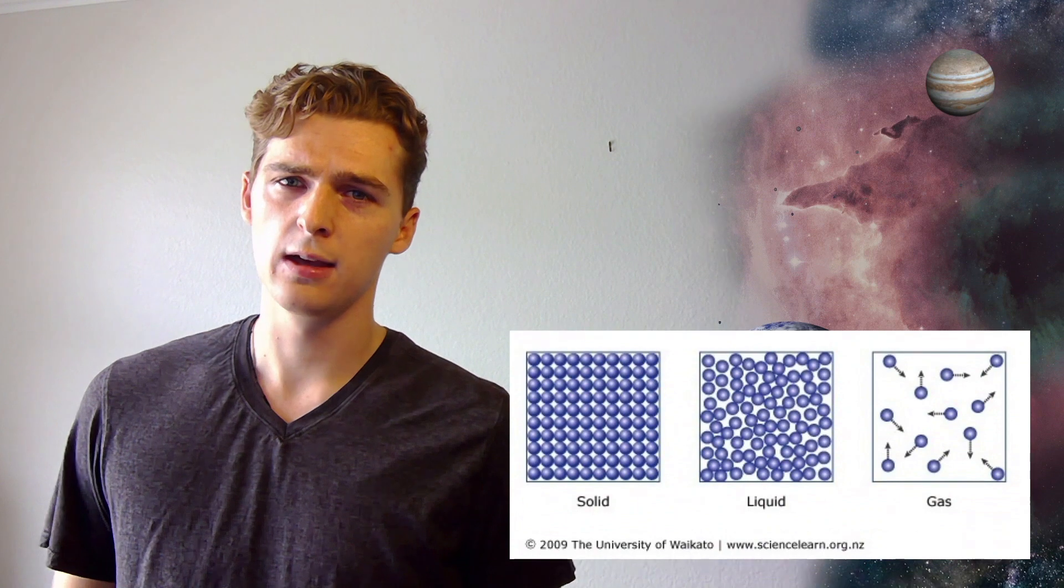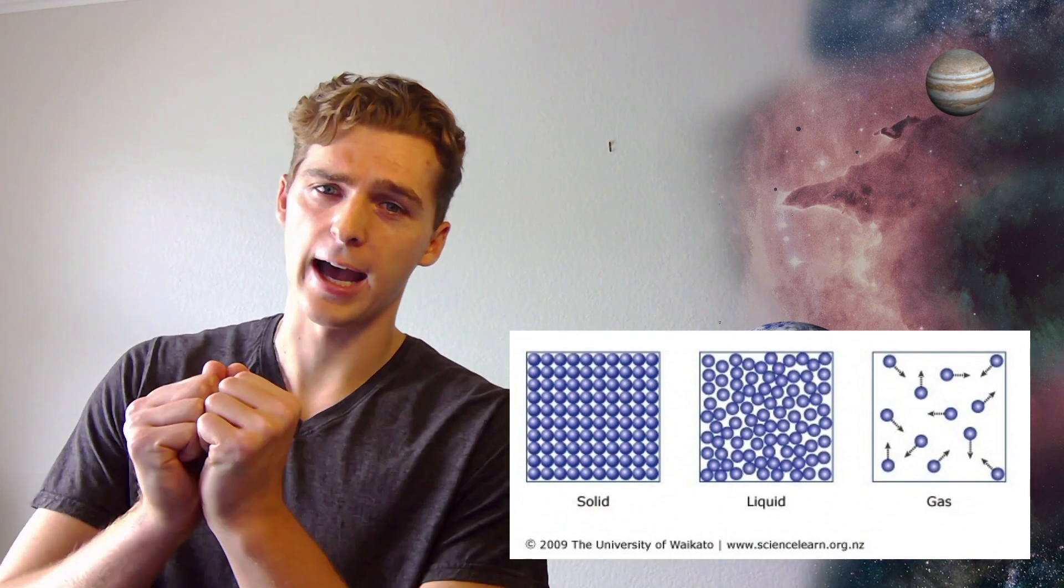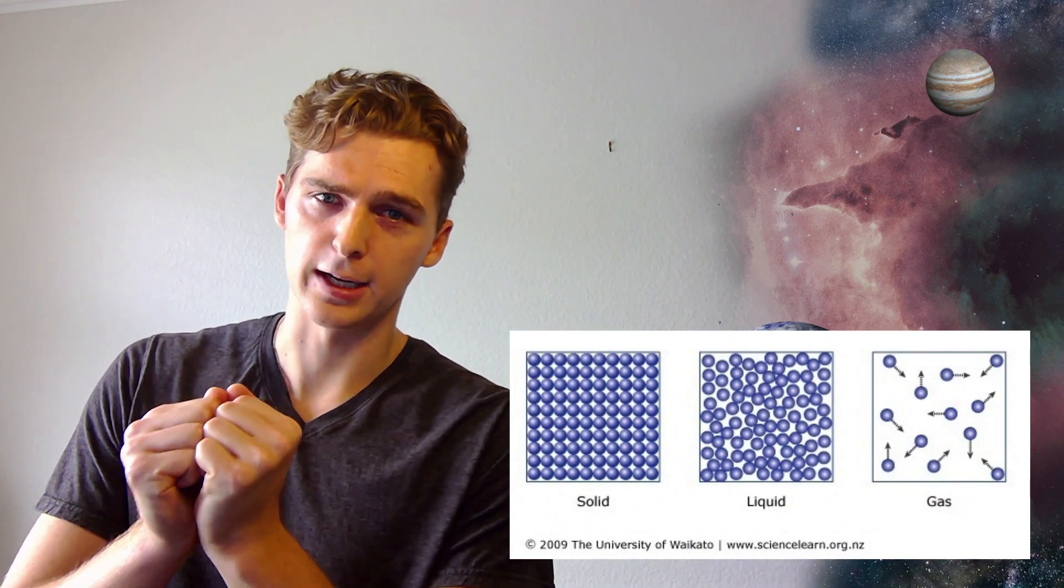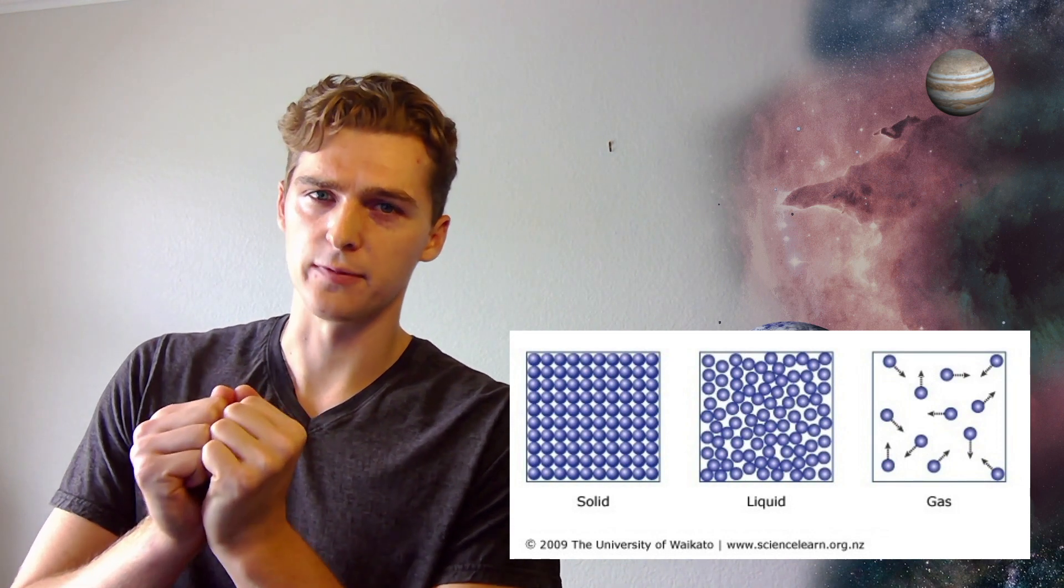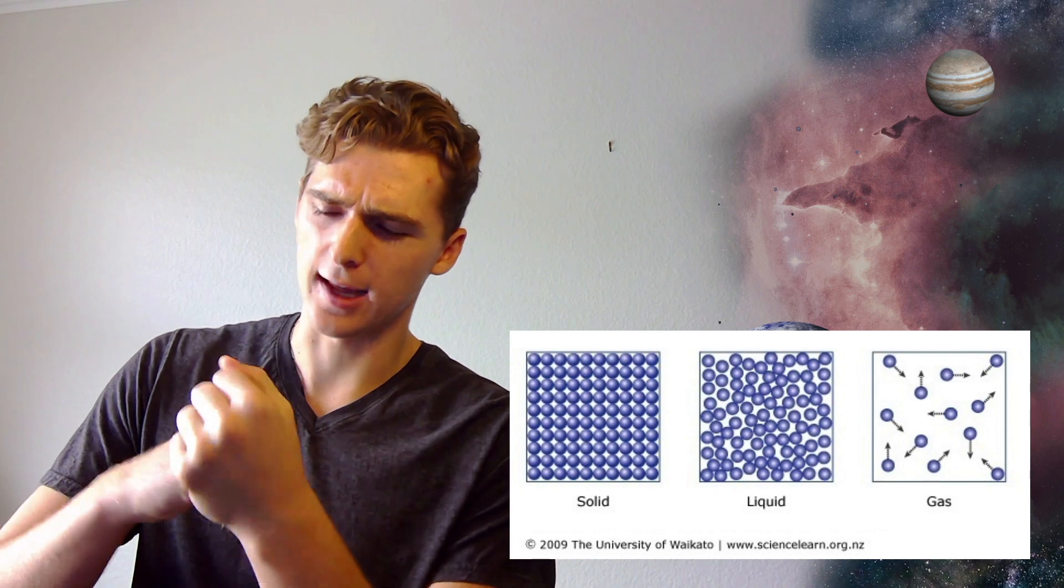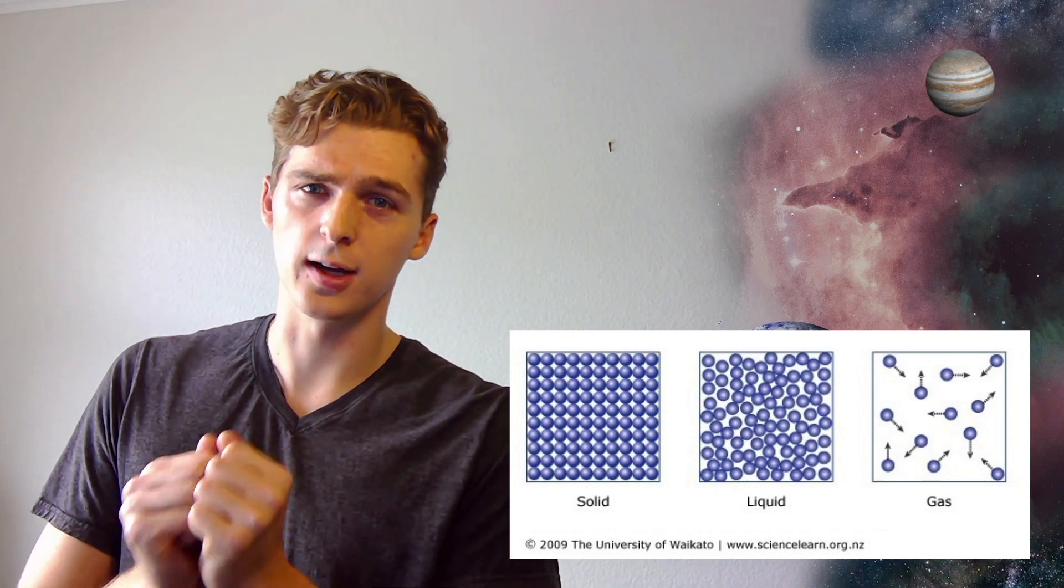For example, in a solid, these forces are so strong that each atom is tightly bound to its neighbor and unable to move. But if we heat up our solid, these atoms eventually gain enough energy to move and slide independently of each other. This forms a liquid.